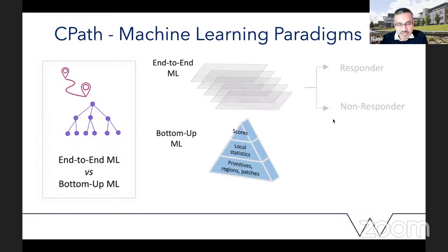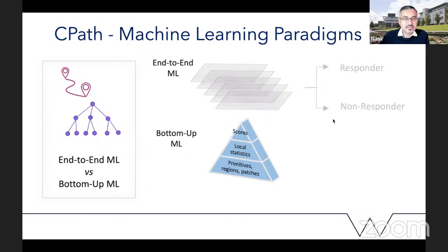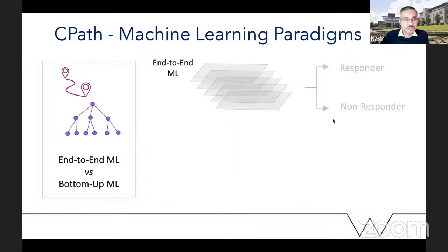The approach we have taken in our group is more bottom-up machine learning. We start by recognizing, segmenting, detecting, and classifying primitives all the way down to nuclei — sometimes looking at sub-nuclear structures, for example in multiplex or multi-IHC data. We then look at regions, recognizing various kinds of objects like vessels, nerves, and glandular structures, and recognize various kinds of patches — a very small part of the full slide image — building local statistics on the back of those primitives.